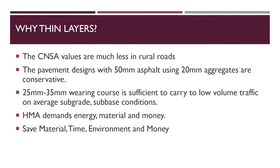In rural roads, the cumulative number of single axles is much less in value. We are always going for 50 mm asphalt with 20 mm aggregates, but we can go for a thickness of 25 mm to 35 mm wearing course, which may be sufficient to carry low volume traffic on normal average subgrade and subbase conditions. Since HMA demands energy, material, and money, going for a thinner layer will be a good option in order to save material, time, environment, and money.